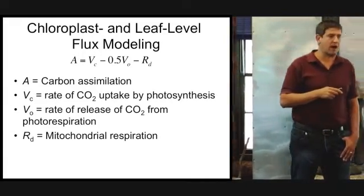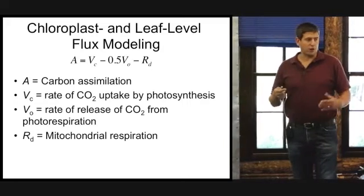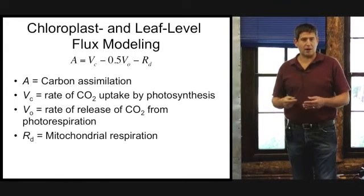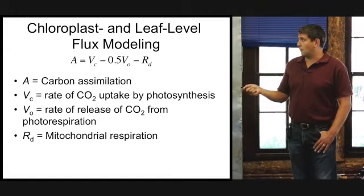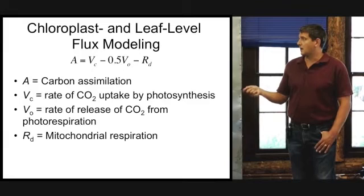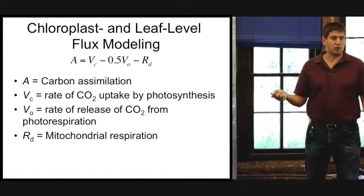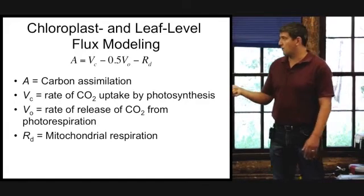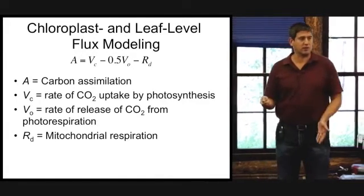And this RD represents the mitochondrial respiration. That's the CO2 flux coming out of the leaf as a function of that carbohydrate being metabolized by the mitochondria. So basically, if your photorespiration is really high and your mitochondrial respiration is really high, your VC in turn will be low. You end up with negative carbon assimilation. You're basically just taking the gross uptake and you're subtracting away these two things that are releasing the carbon dioxide.